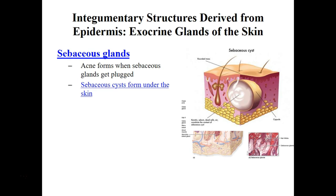Sebaceous cysts form deep to the surface of the skin and don't have an opening to the surface. Unlike acne, a sebaceous cyst is completely surrounded by a connective tissue covering and must be removed — the capsule has to be taken out so that the cyst goes away. Typically, the doctor will cut the wound open and then pull the tissue out.